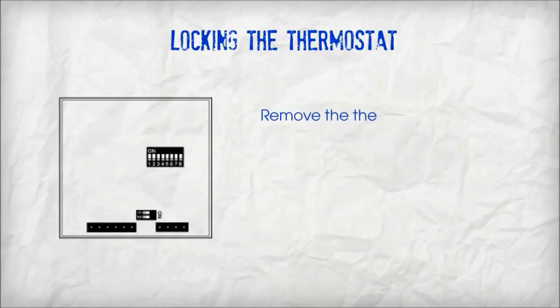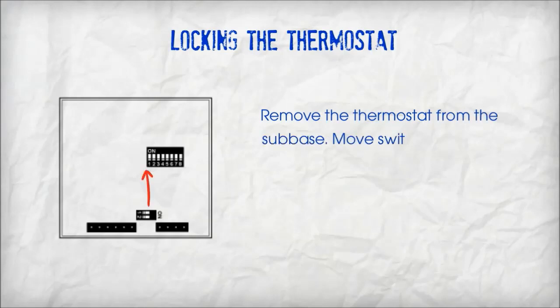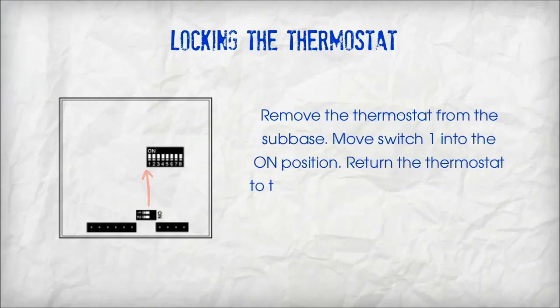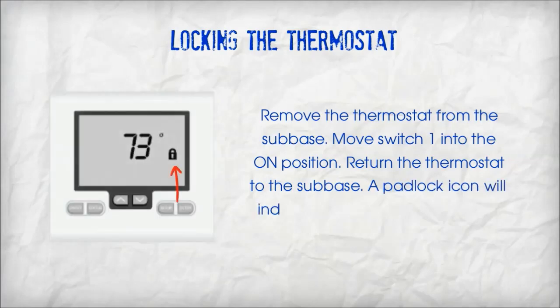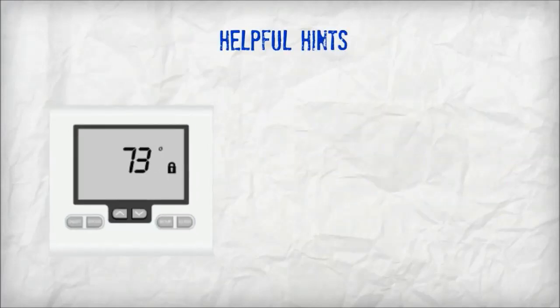To lock the thermostat, remove the thermostat from the subbase. Move switch 1 into the on position, then return the thermostat to the subbase. A padlock icon will indicate the thermostat is locked.